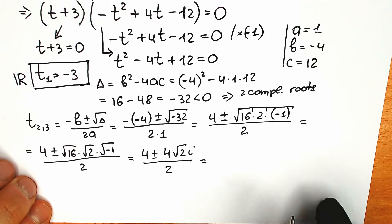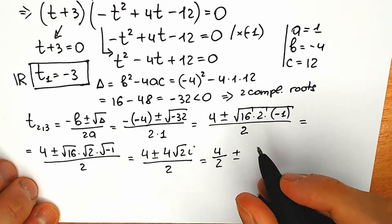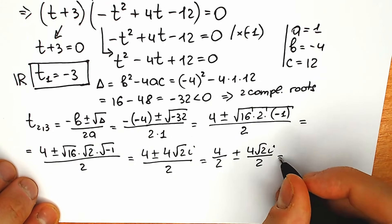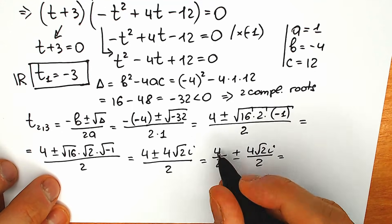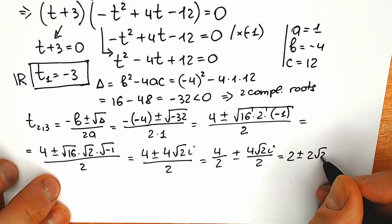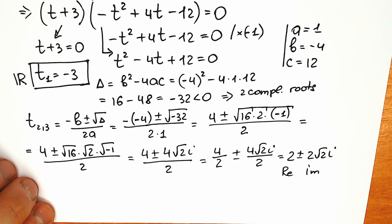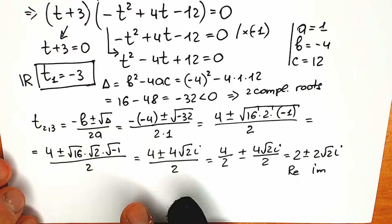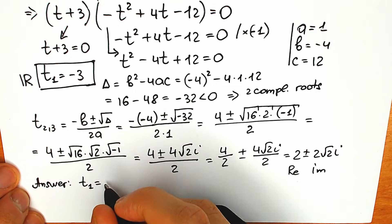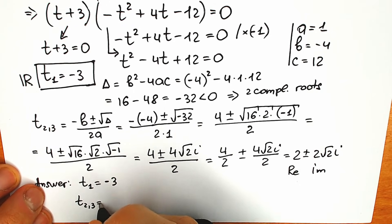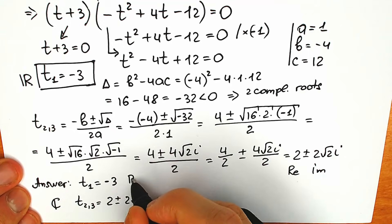Dividing numerator by 2 in two parts: t₂ and t₃ equal 2 ± 2√2·i. This is our real part and imaginary part. Let's gather all roots: t₁ equals minus 3, and t₂, t₃ equal 2 ± 2√2·i — two complex roots and one real number root.